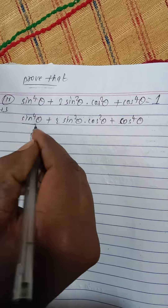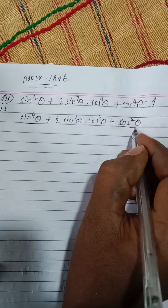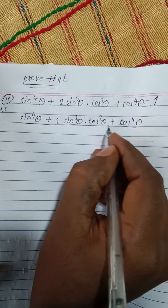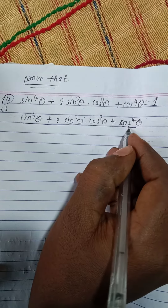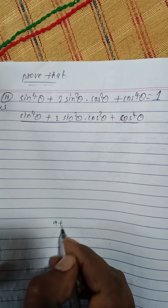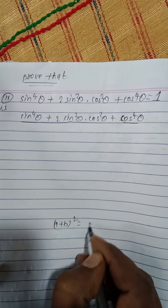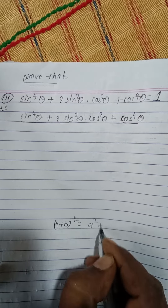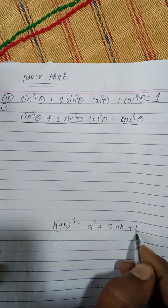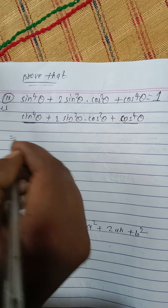Here we can recognize this as a perfect square. We need to use the formula (a + b)² = a² + 2ab + b². This expression is in the form of that square.